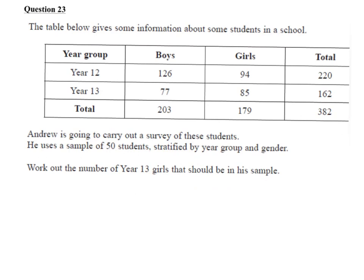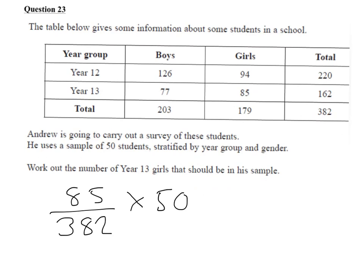There are 85 girls in year 13, out of a total in the school of 382. So that's the fraction or proportion of students that are girls in year 13. We simply multiply that by the number we require in the sample and then round to the nearest whole number — you can't have a fraction of a person.